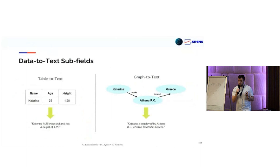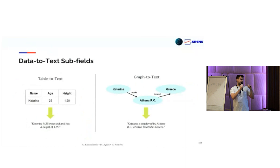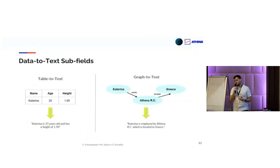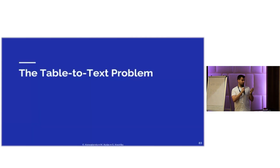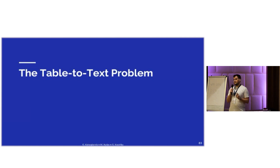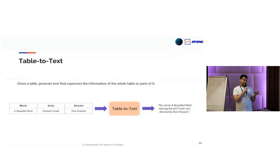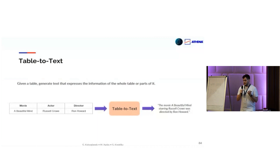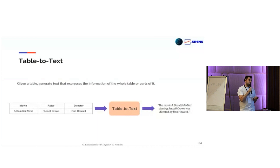Before we continue, we'll make a separation between two data-to-text fields: table to text, where we give as input a table and get back a verbalization, and graph to text, where we give as input a graph and get back a verbalization. Let's talk about the table-to-text problem. A simple definition: given a table, generate natural language that expresses the information included in the whole table or parts of the table.